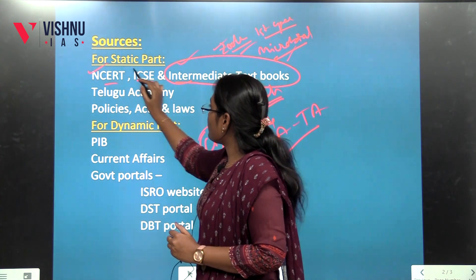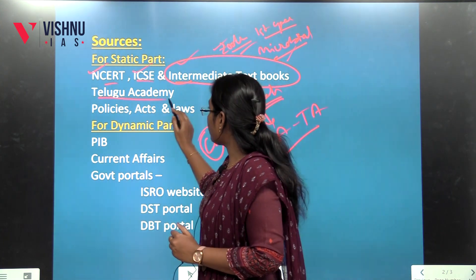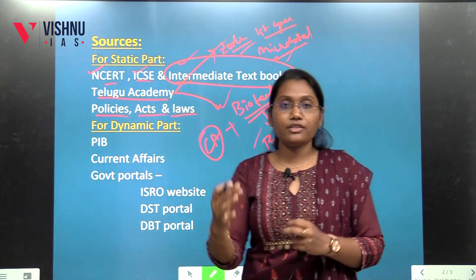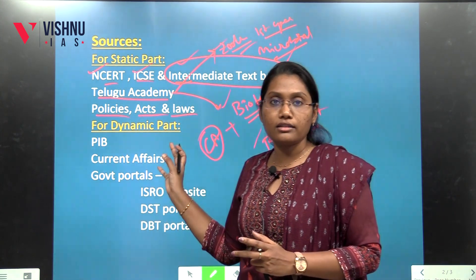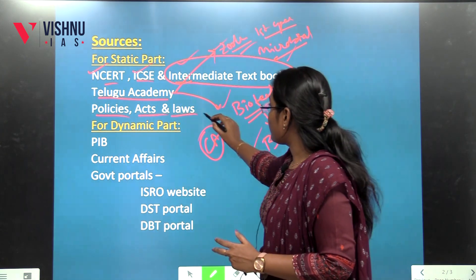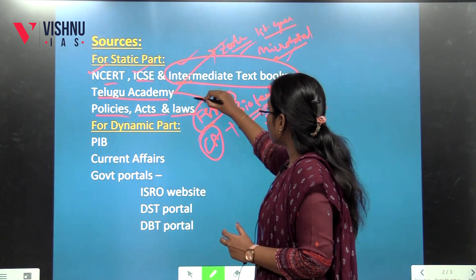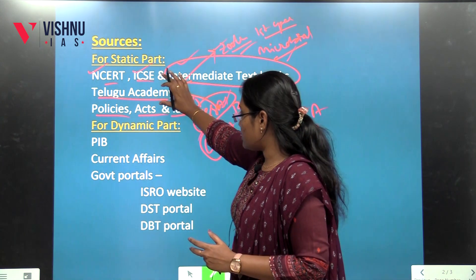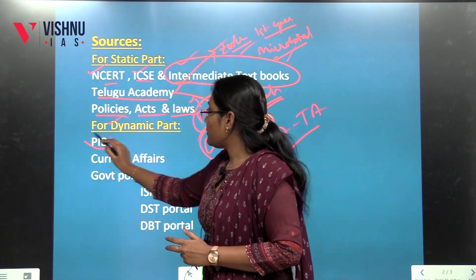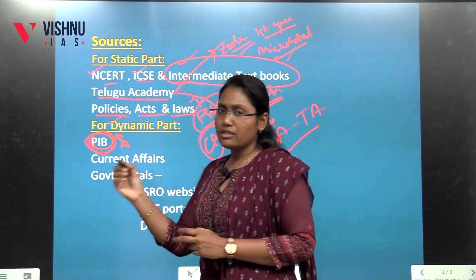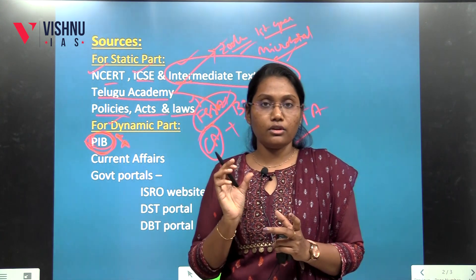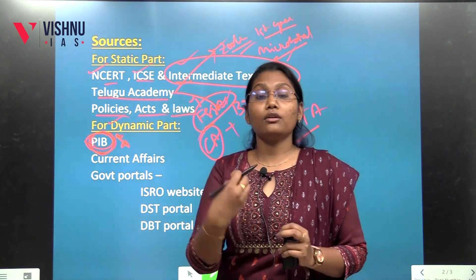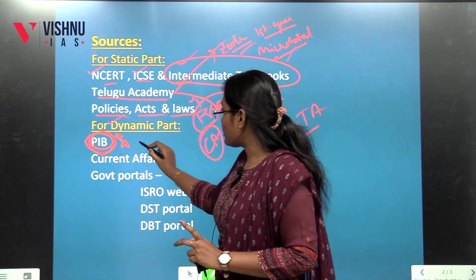In addition to NCERTs, ICSE, e-books, and a few Telugu Academy textbooks, there are some policies, acts, and laws. If you want to choose current affairs, there is a related chart for what you want to cover in the static part. Coming to the dynamic part, PIB is the very most important source. You can use the Silver Sloan notes for keywords. You can use PIB and detailed articles. Along with current affairs, the static and current affairs — this is the most authentic source.